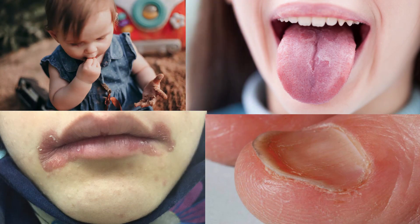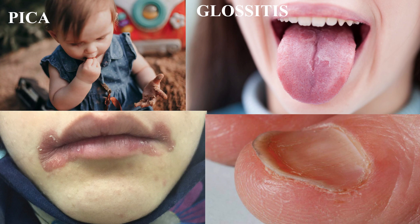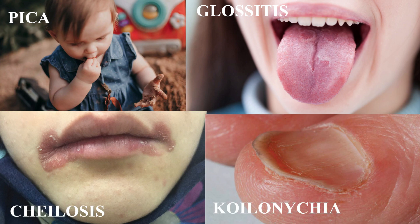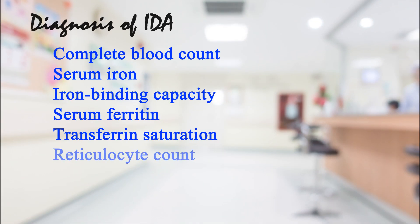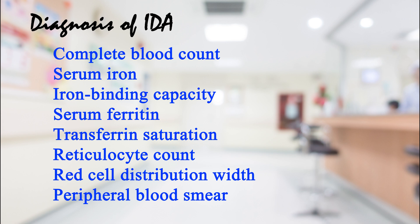In addition to the usual manifestations of anemia, some uncommon symptoms occur in severe iron deficiency. Patients may have pica, an abnormal craving to eat non-food substances like ice, dirt, paint, starch, and ashes. Other symptoms of severe deficiency include glossitis, cheilosis, and concave nails known as koilonychia.